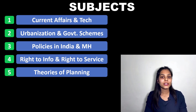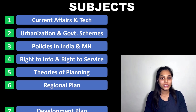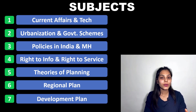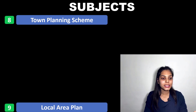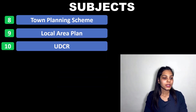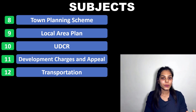The next is regional plan, followed by development plan. You have to study both very properly because they are very important. The next is town planning scheme, then local area plan, and tenth is UDCR, in which they have included the regulations. Eleventh is development charges and appeal, and twelfth is transportation.